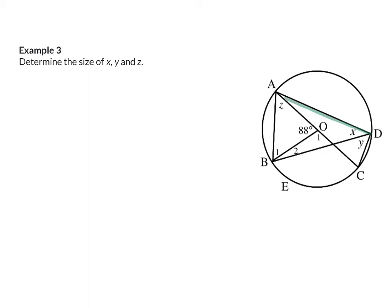If we have a look at x, we will see that x is formed or subtended from arc AB. From arc AB, I can also form an angle at the center, which is the 88 degrees. So I can say that angle x is half that of the angle at the center. My reason for that, angle at the center is twice the angle on the circumference, and that means that x is 44 degrees.